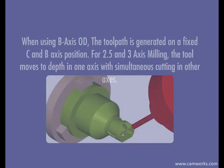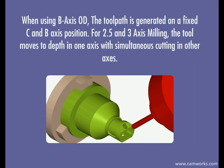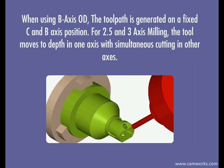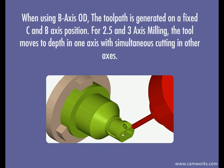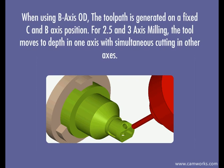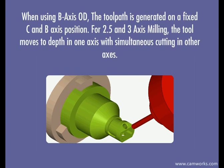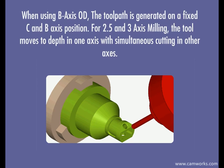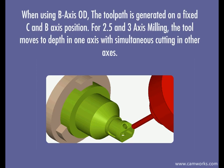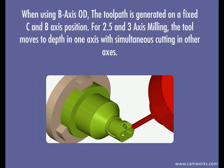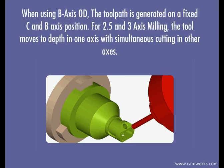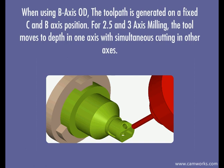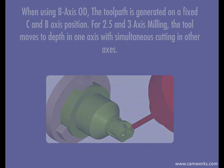When using B-axis OD, the toolpath is generated on a fixed C and B-axis position. For 2.5-axis milling, the tool moves to depth in one axis with simultaneous cutting in other axes.